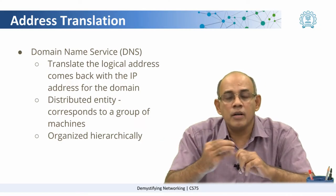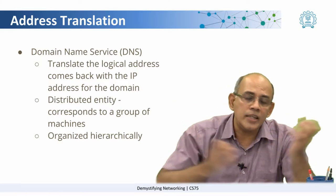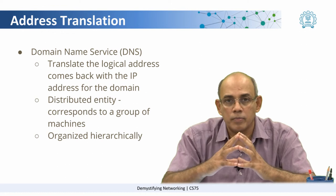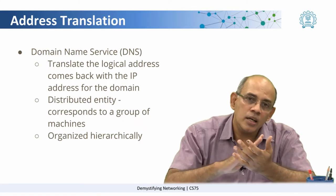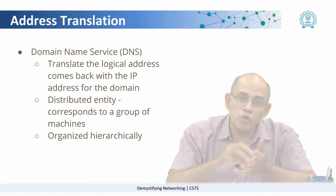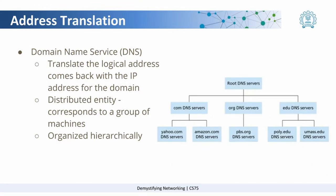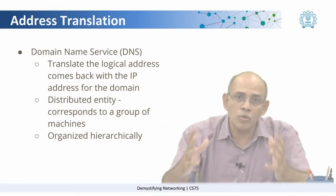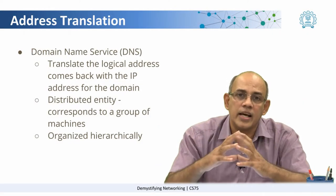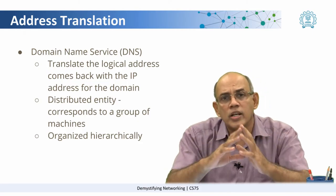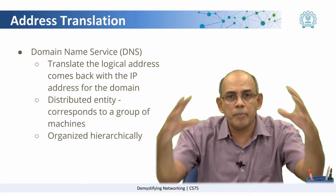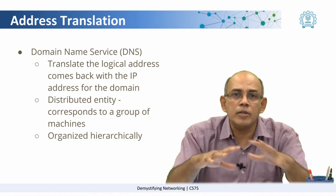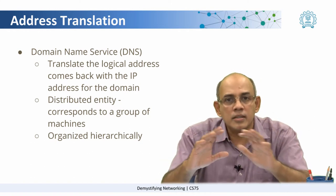The IP address itself can have multiple IP addresses for a given domain. There will be one machine or a group of machines to which the domain name is mapped. This domain name server itself is a distributed entity because we cannot have a single domain name server for the entire world. Just as IP addresses are organized hierarchically, the domain name service is also organized hierarchically — there will be a domain name server for an organization, then one for the country, and a network of these domain name servers across the internet.